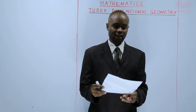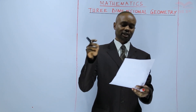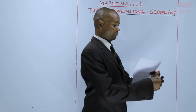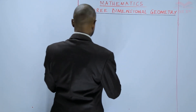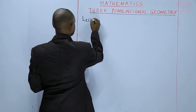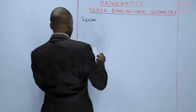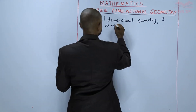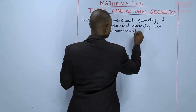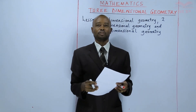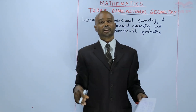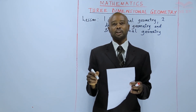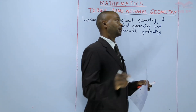In our today's lesson we shall only identify what could be the meaning of one-dimensional geometry, two-dimensional geometry, and three-dimensional geometry. The objective is that the learner should be able to identify one-dimensional geometry, two-dimensional geometry, and three-dimensional geometry in any given figure.